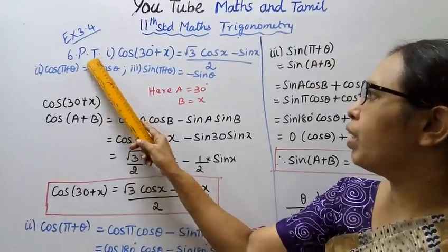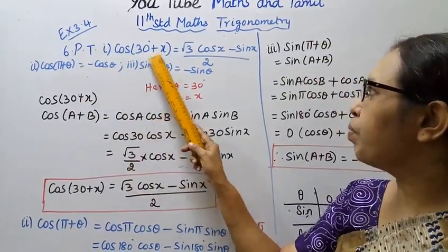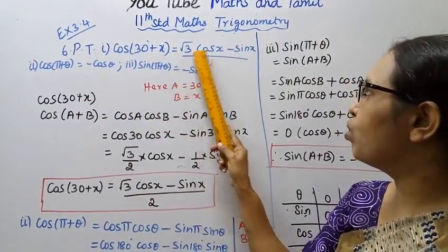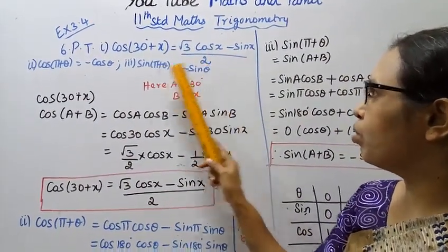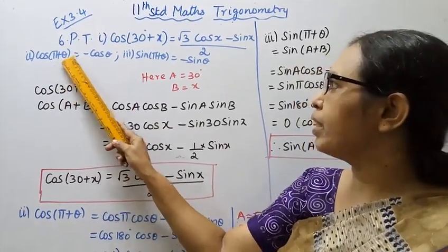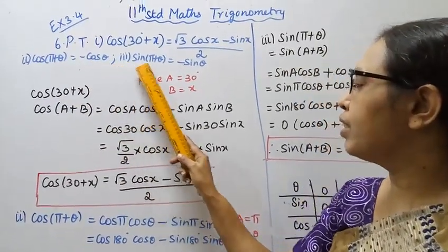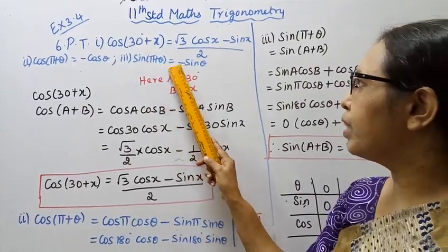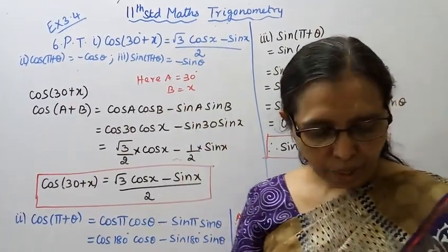6 problems to prove. First: cos(30 + x) = (√3 cos x - sin x) / 2. Second: cos(π + θ) = -cos θ. Third subdivision: sin(π + θ) = -sin θ.